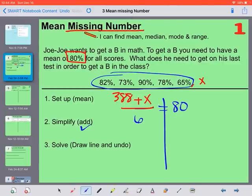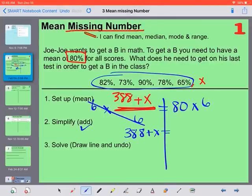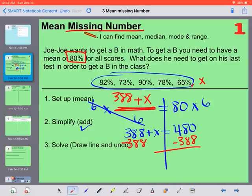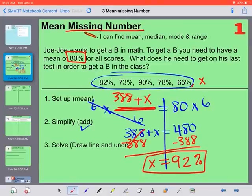Now we just need to solve it. Draw your line to undo. We cannot divide this by 6 because we're not there yet. To undo dividing by 6, the opposite of dividing by 6 would be multiplying by 6. 6 divided by 6 is 0, so we have 388 plus x. And then 80 times 6 gives us 480. And then undo positive 388 would be subtracting 388. So we end up with x equals 480 minus 388 be 92. So he would have to get 92% on his next test in order to get a B in math.